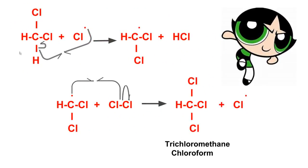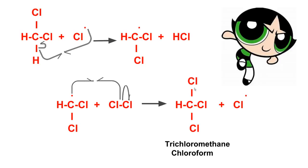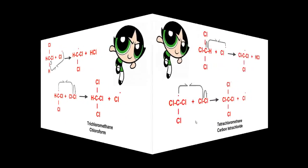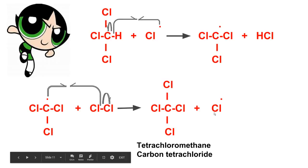Dichloromethane reacts with the chlorine free radical and again the C-H bond is homolytically cleaved — one electron jumps on the carbon and the other meets up with the chlorine free radical to form hydrochloric acid and a CHCl₂ free radical. This then reacts with a chlorine molecule to form trichloromethane, or chloroform, and a chlorine free radical. Finally, chloroform reacts with the chlorine free radical and the last C-H bond is homolytically cleaved, forming HCl and a CCl₃ free radical, which reacts with chlorine to form CCl₄ — tetrachloromethane, or carbon tetrachloride — and a free radical is produced.